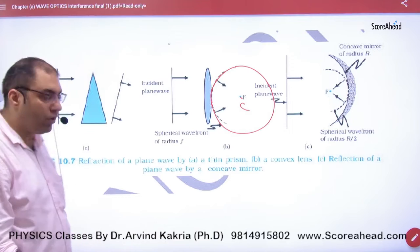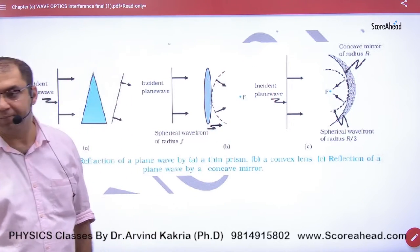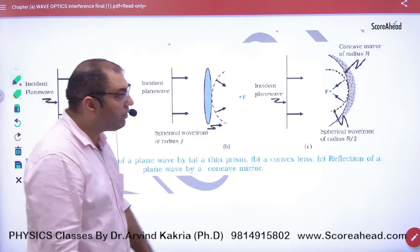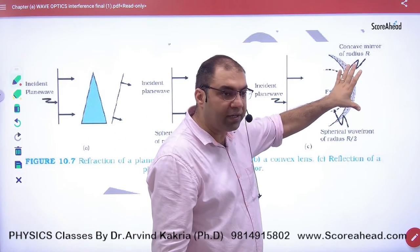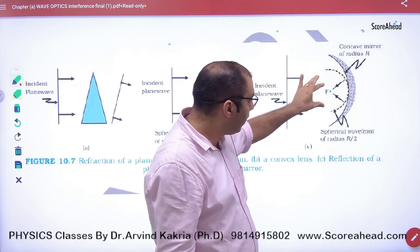Through the center. So you have to draw this wavefront like this. This is a converging wavefront from an initially plane wavefront. When it hits the lens, it will curve like this.